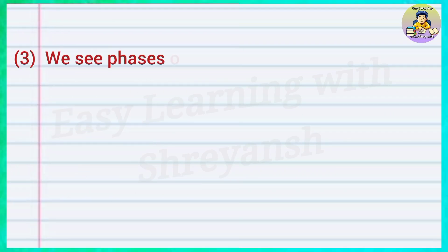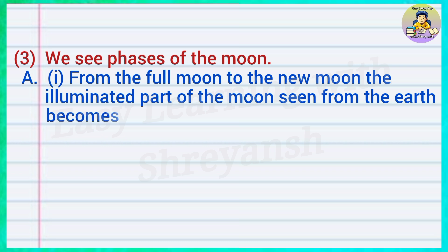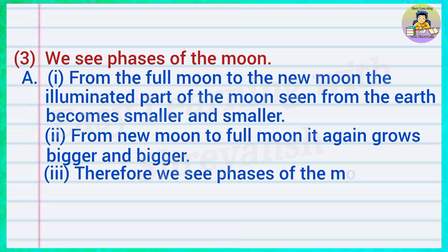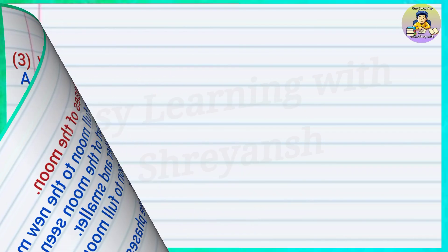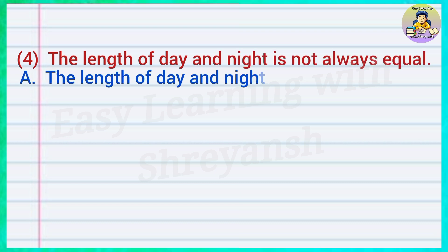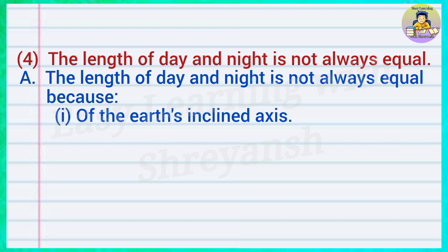Three: We see phases of the moon. Answer: From the full moon to the new moon, the illuminated part of the moon seen from the earth becomes smaller and smaller. From new moon to full moon it again grows bigger and bigger; therefore we see phases of the moon. Four: The length of day and night is not always equal. Answer: The length of day and night is not always equal because of the earth's inclined axis and its revolution around the sun.